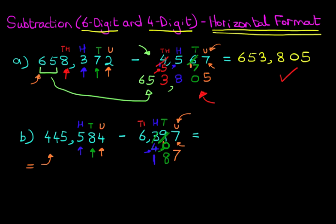Moving on to the thousands. We've got 6 thousands and we need to get to 5. The next number after 6 which has got 5 units is 15. So what number added to the 6 is going to give us 15? It's 9 — six plus 9 is 15. And we're carrying 1 over.